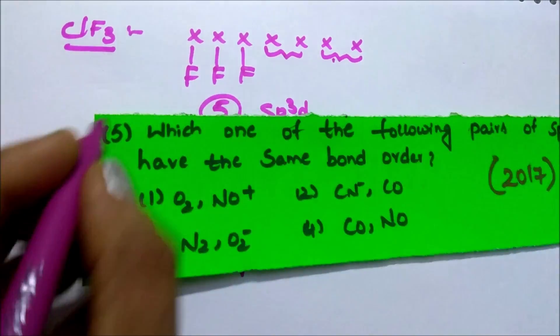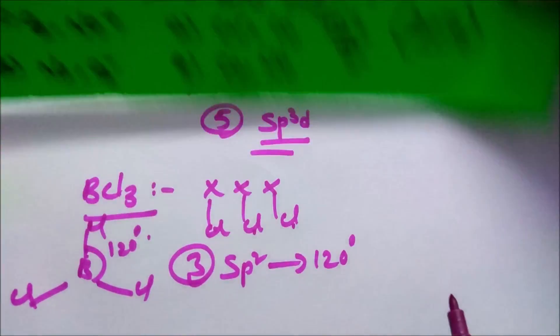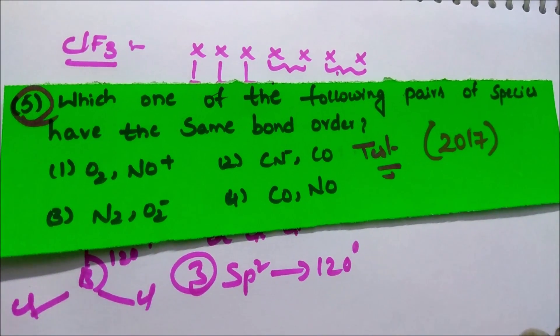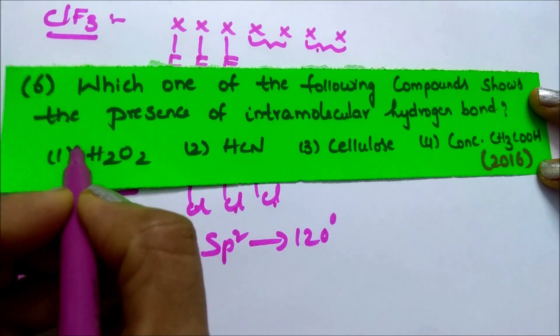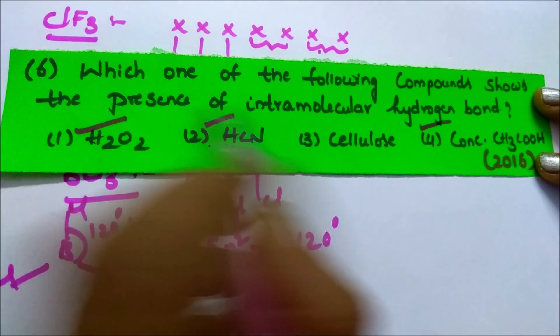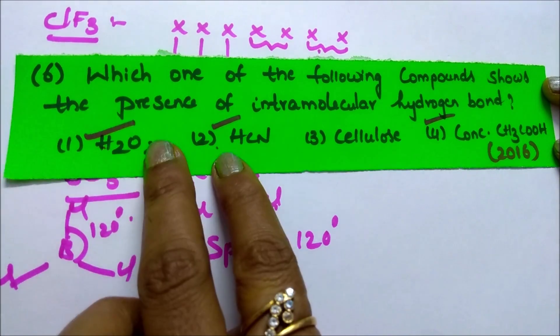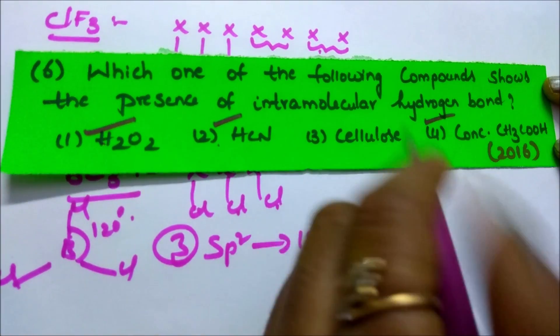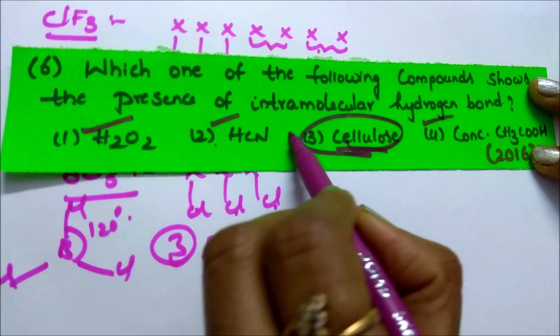The next question on bond order is a test-yourself question — try it using the tricks covered. Coming to the question on hydrogen bonding: which compound shows intramolecular hydrogen bonding? H2O2, HCN and concentrated acetic acid show intermolecular hydrogen bonding, meaning hydrogen bonding between two different molecules. But cellulose shows hydrogen bonding within the molecule itself — that is intramolecular — so cellulose is the correct answer.